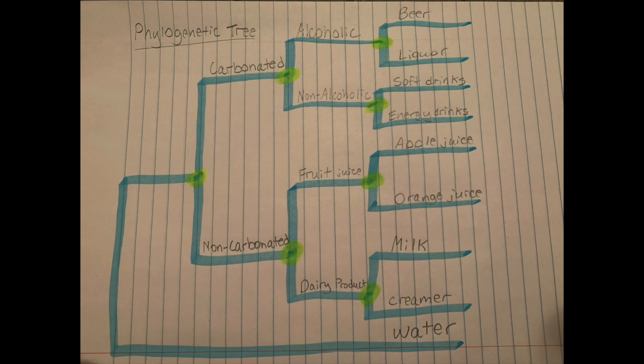At the top, carbonated drinks will diverge into alcoholic and non-alcoholic drinks. At the last internal node at the top, the alcoholic drinks will diverge into beer and liquor.